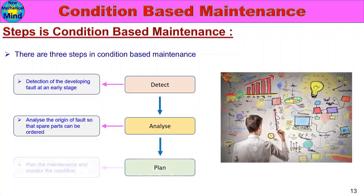The third step is Plan — plan the maintenance and monitor the condition. After the analyze step, confirm the machine condition, plan the spare parts, coordinate with the production department on how the maintenance will be carried out, complete the maintenance activity, and continue monitoring. These three steps form a repeated cycle.